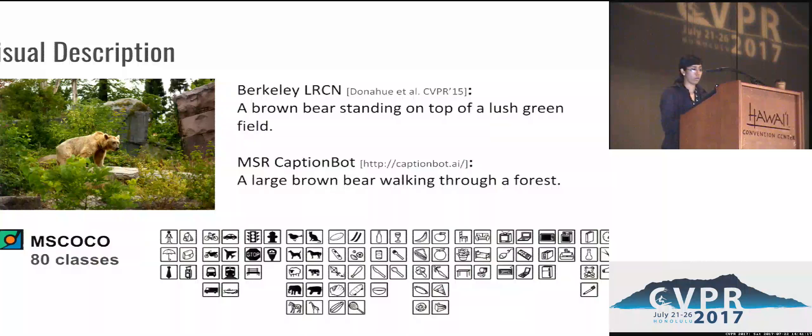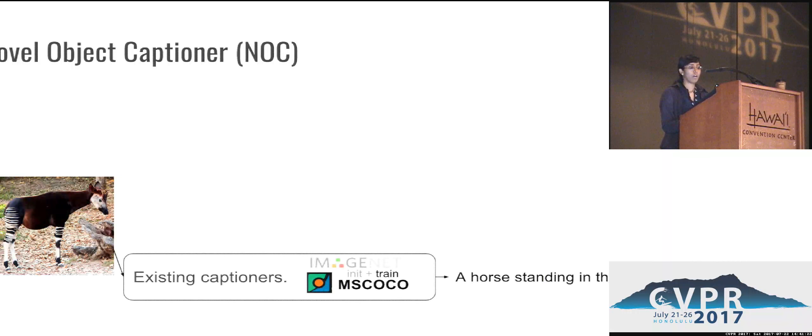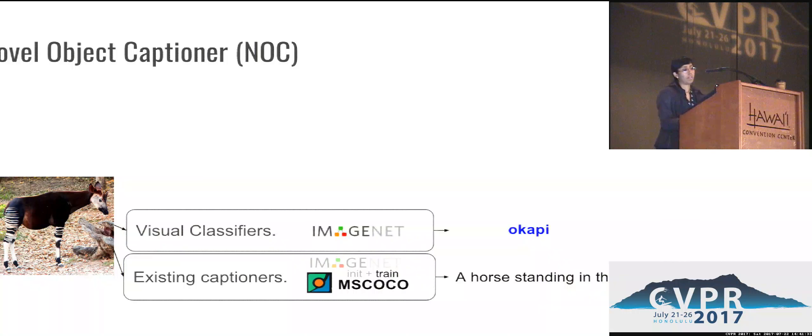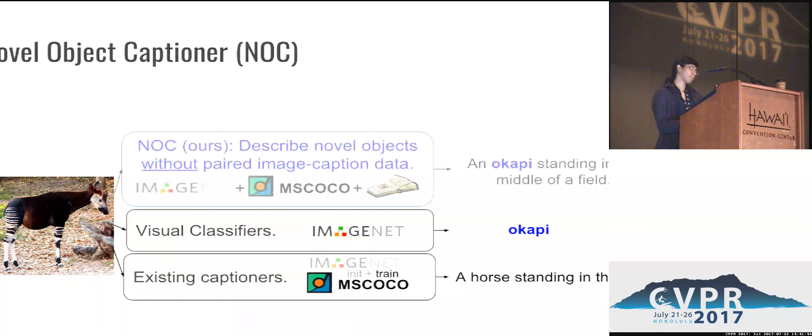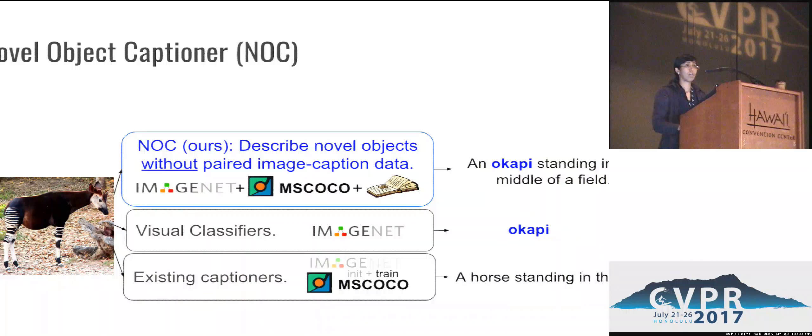Hence, given an image like this which contains an object that's not in MS COCO, existing visual captioners would generate a description saying a horse is standing in the dirt. But we know that this animal exists in ImageNet and can be classified as an Okapi by current visual CNN models. So the question we asked is: can we generate descriptions of such objects in context without paired image caption training data? For example, to say a sentence like an Okapi standing in the middle of a field.